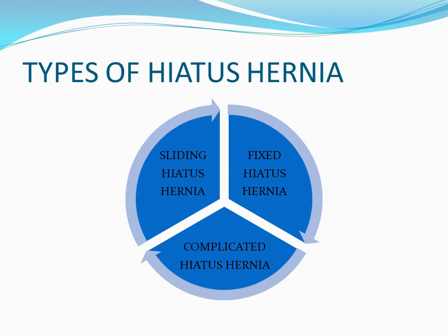To summarize the types: in sliding hiatus hernia, the gastroesophageal sphincter and upper part of the stomach move up and downward through the diaphragm. In fixed hiatus hernia, the upper part of the stomach moves into the chest cavity and stays fixed there. In complicated hiatus hernia, the entire stomach moves into the chest cavity, and this type is not common. The most common type is sliding hiatus hernia.